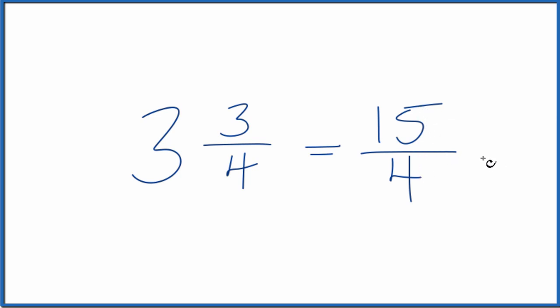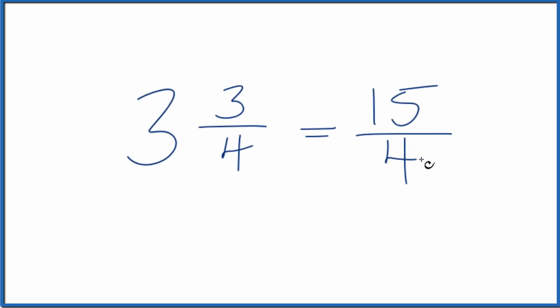Let's do that one more time. We take 3 times 4, that's 12, plus 3. 12 plus 3 is the 15, bring the denominator across.